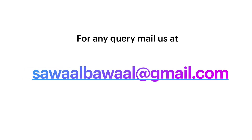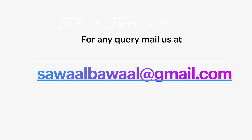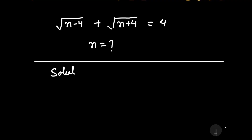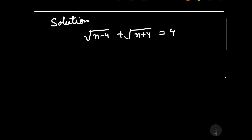Now let us start to solve this question. Our question is square root of (n minus 4) plus square root of (n plus 4) is equal to 4, and we have to solve for n. If we solve it by the general method, it will be very lengthy, so we will solve it by an easy substitution method.